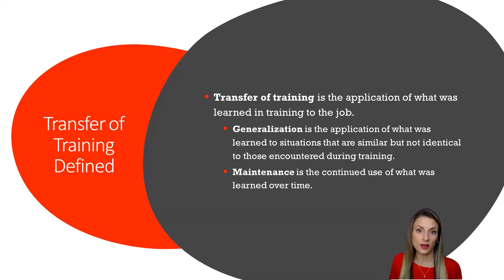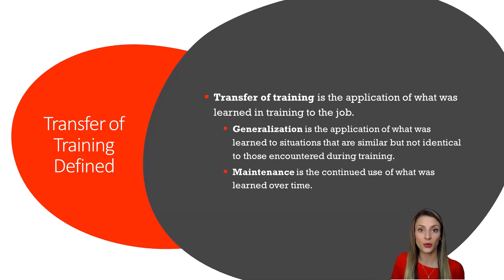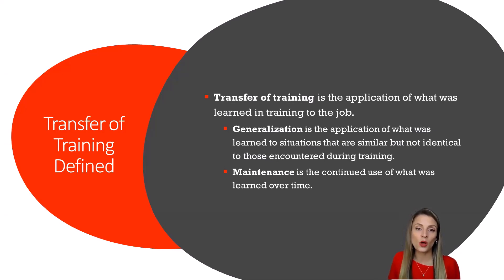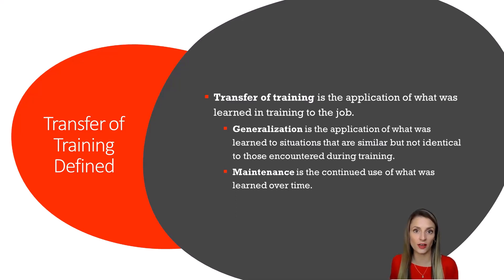But learning isn't enough. We also need trainees to apply what they learned to their jobs. We call this transfer of training. Learning usually happens during training, during the actual learning event, while transfer of training is something that happens post-training, after the learning event.